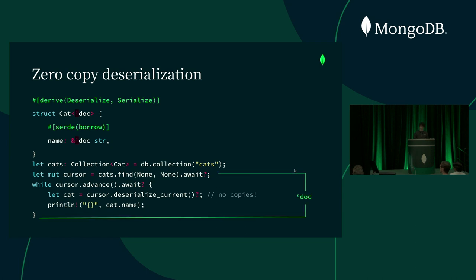Let's take a deeper look to show what the BorrowChecker is actually doing and what it's protecting us from. This green box here indicates the lifetime of the document we're borrowing from. If you remember rule one of the BorrowChecker, borrowers cannot outlive the data they're borrowing from — meaning we can't borrow outside of this green box. Our code as written is okay because everything's happening inside the green box. But if we attempt to return the cat's name from the loop, the reference would escape the box and the BorrowChecker would reject it. In practical terms, if we were able to do that return, the cursor and therefore the document we're borrowing from would become deallocated when the scope is exited, but we'd be returning a reference to that document — a dangling reference — which would be undefined behavior. The BorrowChecker protects us from this, but this is something the C or C++ compiler would be totally happy to allow.